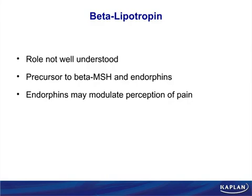Beta-lipotropin is a precursor of beta-melanocyte-stimulating hormone and the endorphins. The point of it is probably the endorphins — endorphins definitely modulate pain, give you runner's high, and help you withstand pain under conditions of stress, which is an awfully good thing.